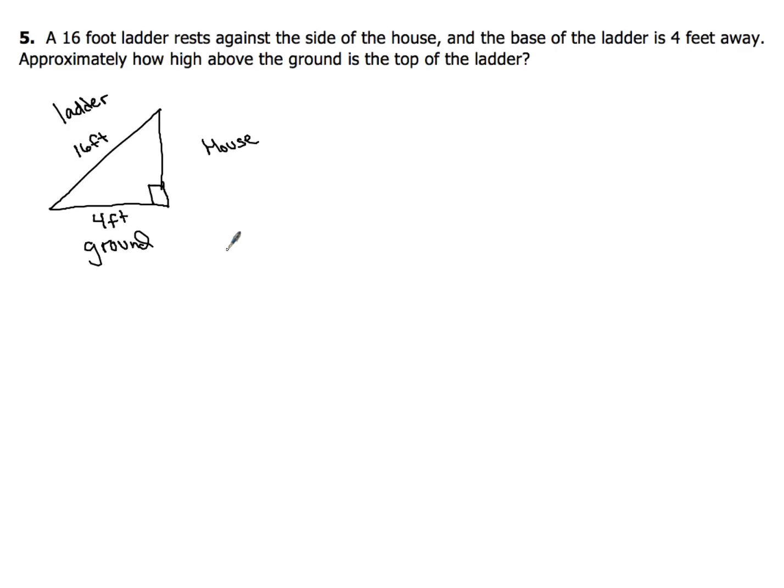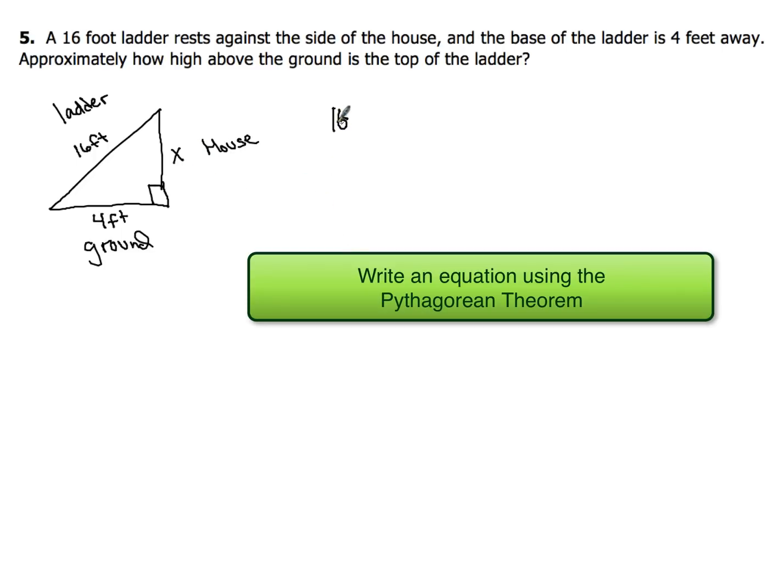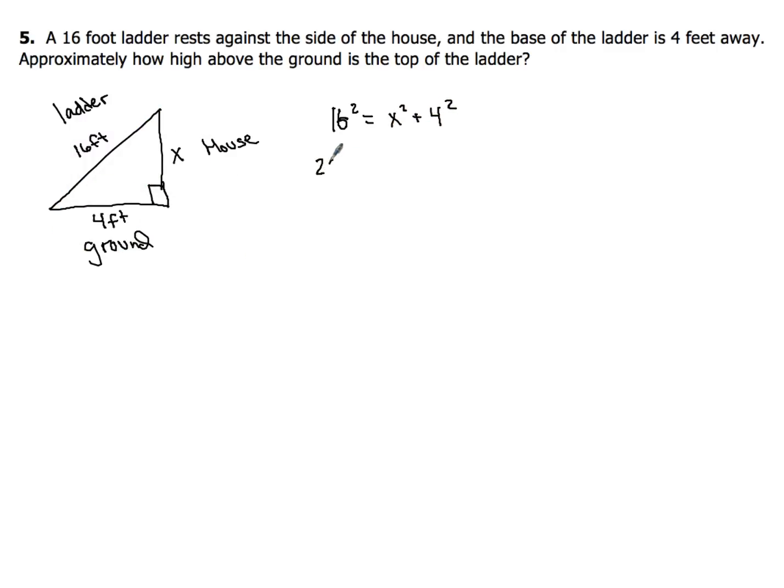And what I want to know is approximately how high above the ground is the top of the ladder? So I'm trying to figure out this piece right here and we're going to call this just x. So that's all you got to do for this. Now set up your Pythagorean theorem. Our hypotenuse 16 squared is x squared plus 4 squared. Now 16 squared, you should know that by now. 256 equals x squared plus 16.